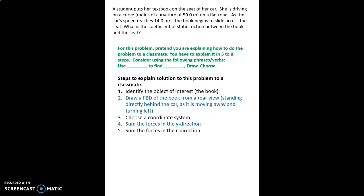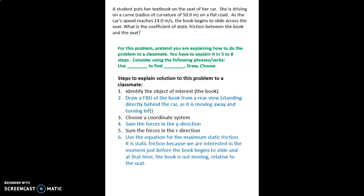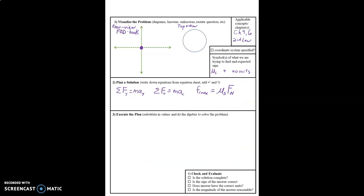We're going to sum the forces in the R direction. We're going to use the equation for the maximum static friction, and it is static friction because we're interested in that moment just before the book begins to slide. And we're going to put those three equations together to find the coefficient of static friction.